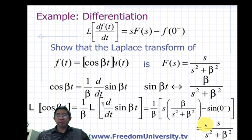Hence what we have is that the Laplace transform of cosine beta t is equal to s divided by s squared plus beta squared.